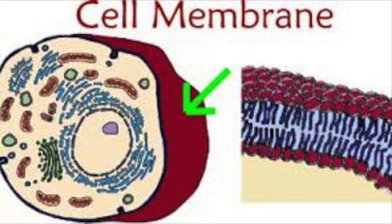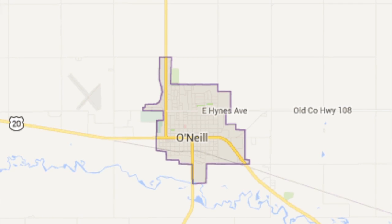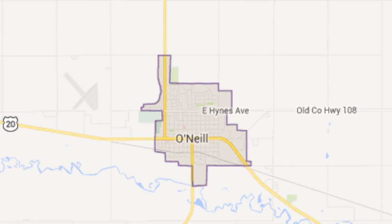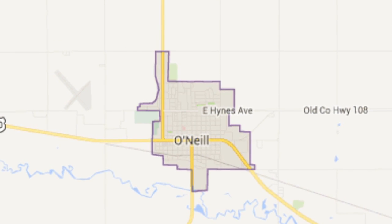The cell membrane is the protective outer covering of all cells. It regulates the interaction between the cell and the environment. We are comparing the cell membrane to the city limit because it is the boundary of the town and it tells you when you are leaving or entering the town.